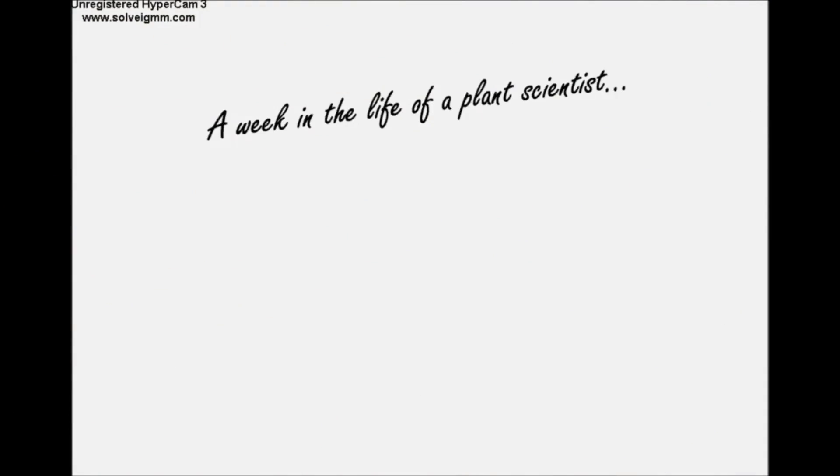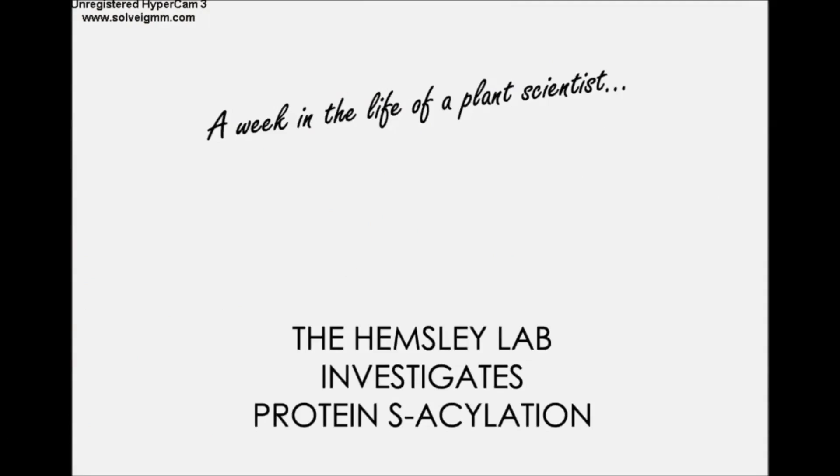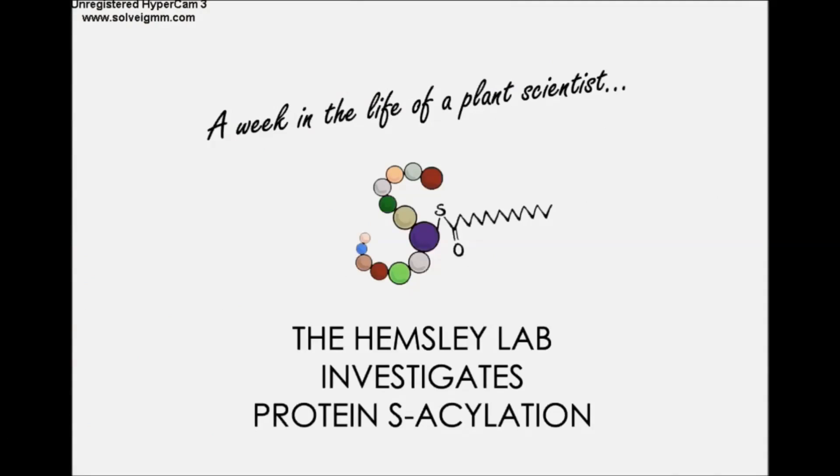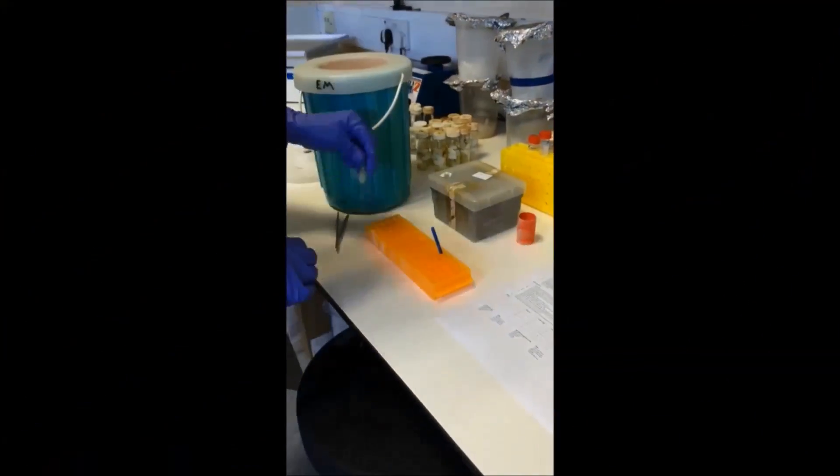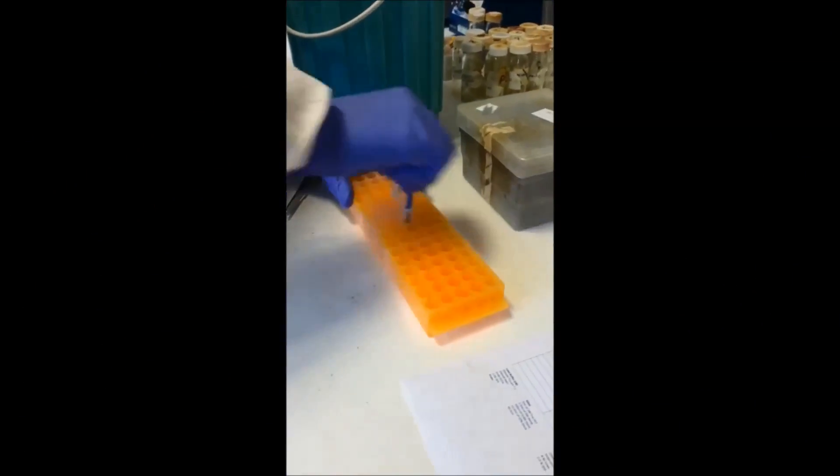Let's show you one of these experiments and give you a glimpse into a week in the life of a plant scientist. After two weeks of waiting for plants to grow, seedlings are harvested, frozen in liquid nitrogen, and ground up into a powder.